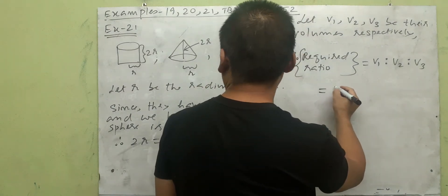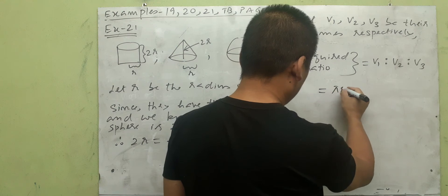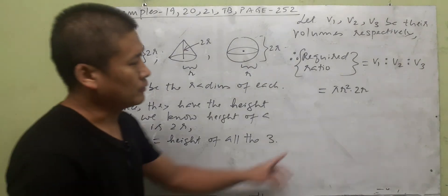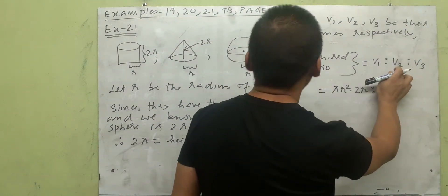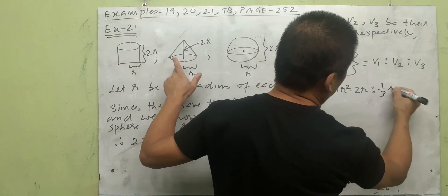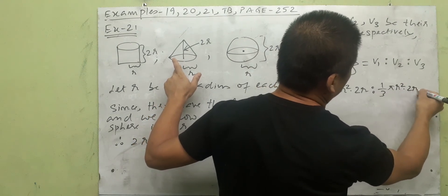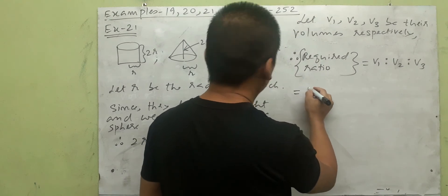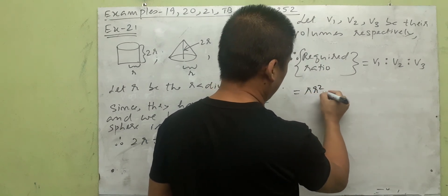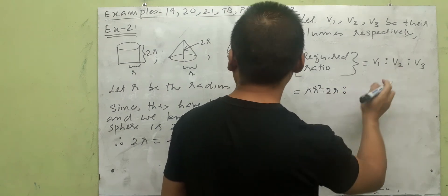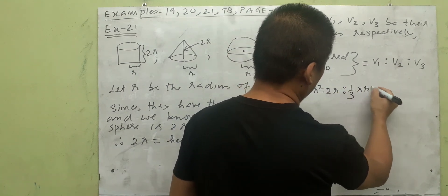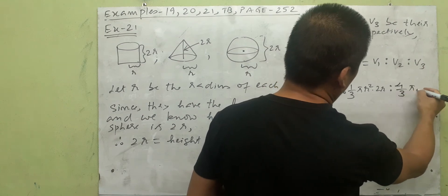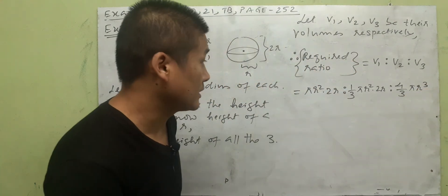Volume of cylinder v1 = π r² h = π r² × 2r = 2π r³. Volume of cone v2 = 1/3 π r² h = 1/3 π r² × 2r = 2/3 π r³. Volume of sphere v3 = 4/3 π r³. So the ratio is 2π r³ : 2/3 π r³ : 4/3 π r³.